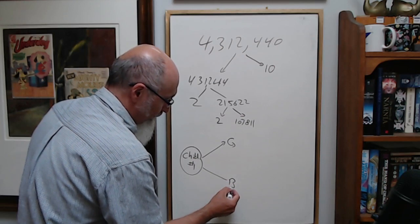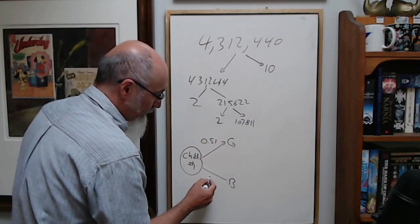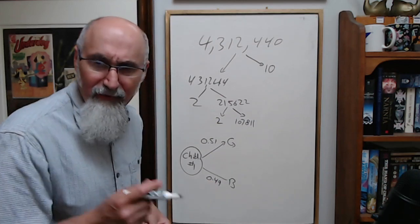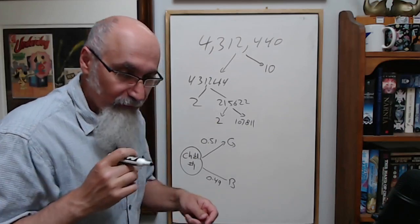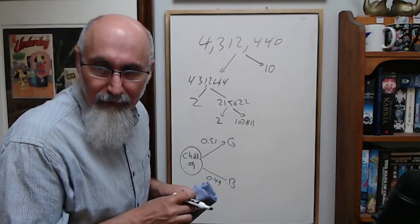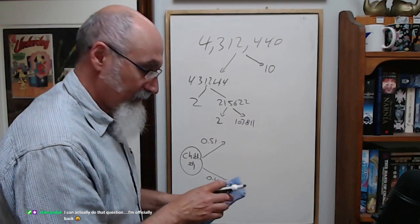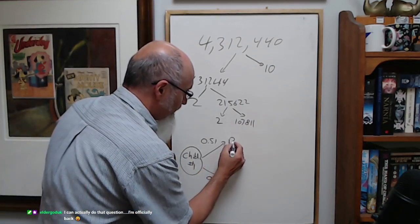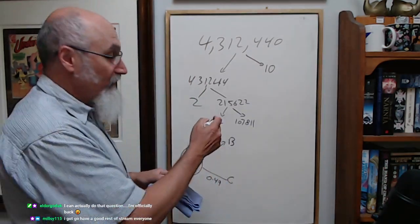Child number one: girl or a boy, right? The probability for a girl is 0.49, the probability of a boy is 0.51. Wait, the other way around. Girl baby is 49%, boy is 51%. So this would be boy, this would be girl.